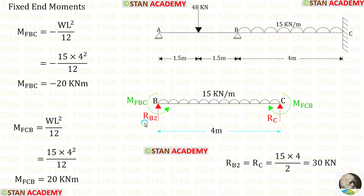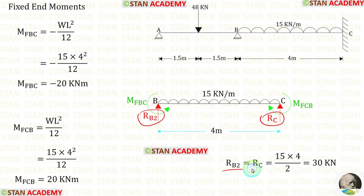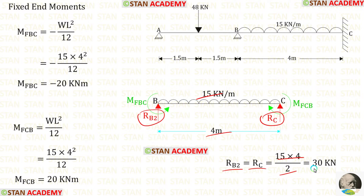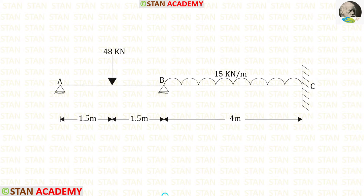Now let us find vertical reactions RB2 and RC in span BC. We have symmetrical loading, so we multiply the UDL 15 by the span length 4 and then divide by 2. We get RB2 and RC each equal to 30 kN.